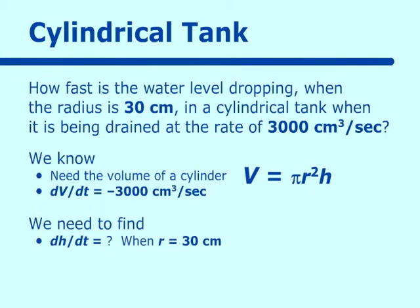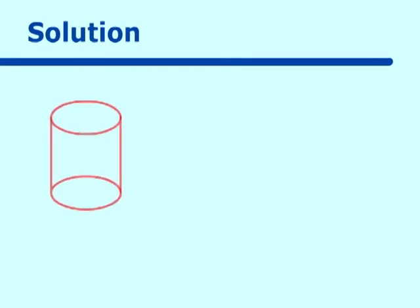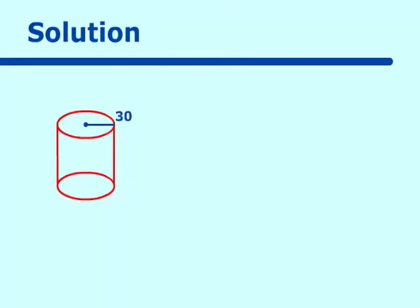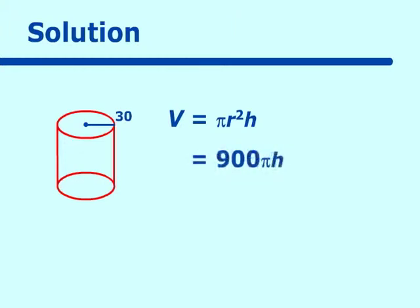We need to find the change in height over the change in time. With a cylinder, the radius always remains the same. Since the radius is 30, we substitute into our equation: V = π r² h becomes V = 30² π h, or 900π h.